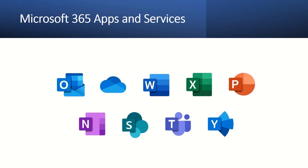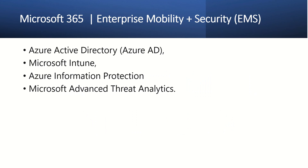Let's see the difference between O365 and M365. In O365 you have Word, Excel, PowerPoint, Office 365, Microsoft Stream, Delve, Planner, etc. M365 is a combo pack — Office applications plus Services, plus Windows 10, plus Enterprise Mobility and Security. Enterprise Mobility and Security plays a major role in M365.